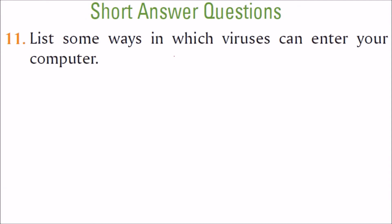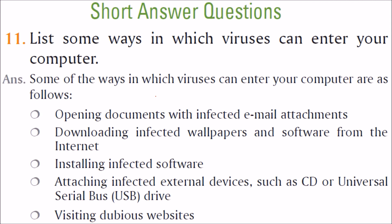List some ways in which viruses can enter your computer. There are many ways: if you open infected email attachments, if you download infected wallpapers, if you install already-infected software, if you attach infected external devices like CDs, DVDs, and USBs, or if you visit dubious websites.